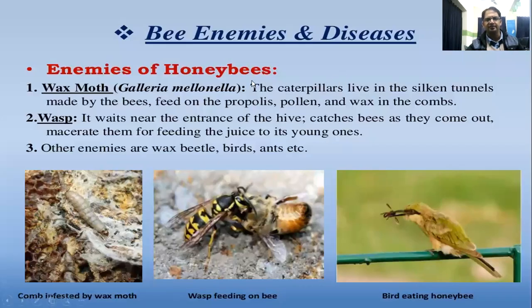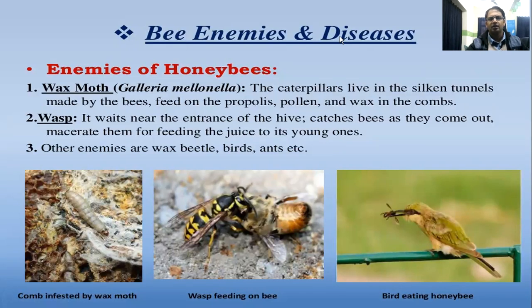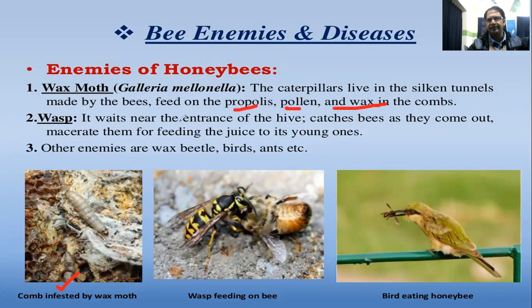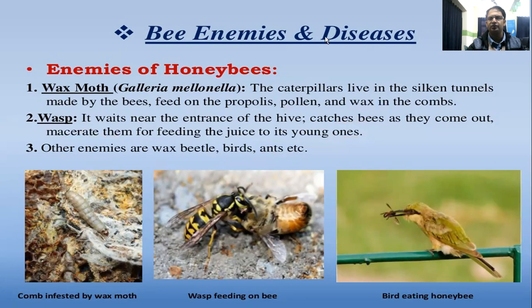Enemies of honeybees include wax moth (Galleria mellonella) and wasps, wax beetle, birds, and ants. The caterpillars live in silken tunnels made by the bees — you will see comb infested by the wax moth. Wasps wait near the entrance of the hive, catch bees as they come out, and macerate them to feed the juice to their young ones.